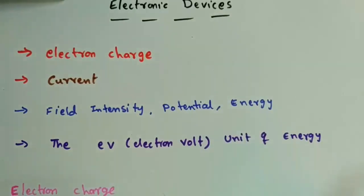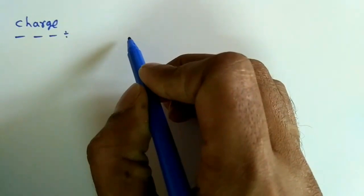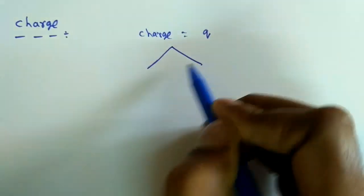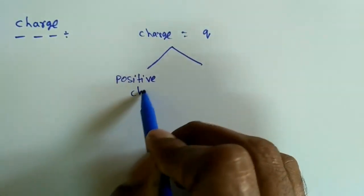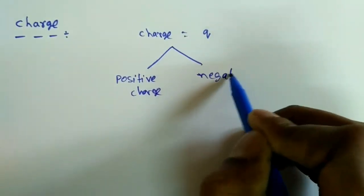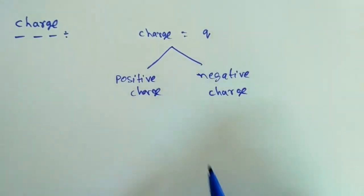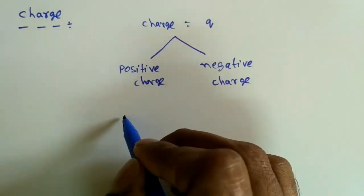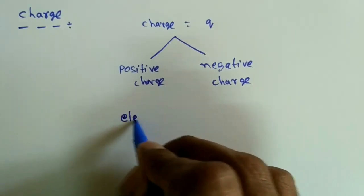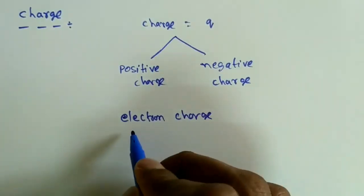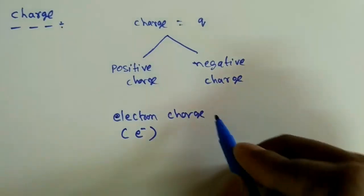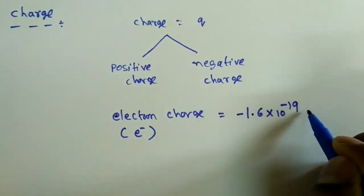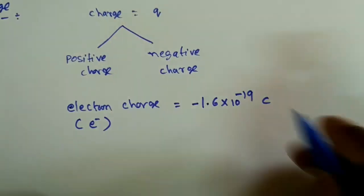So what is the symbol for charge? Generally we use Q. Charge can be of two types: positive charge and negative charge. Electrons are negatively charged particles. The electron charge is denoted as e⁻, and its value is minus 1.6 × 10⁻¹⁹ coulombs. The unit of charge is coulombs.